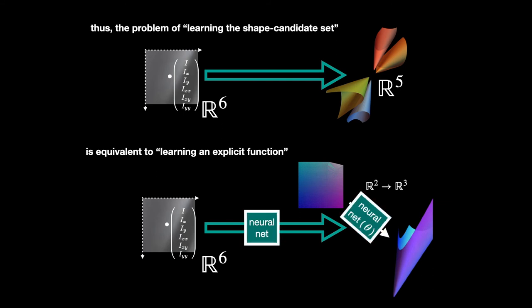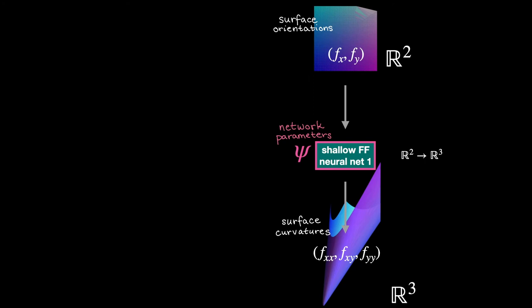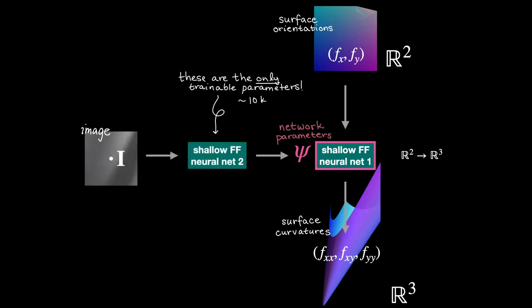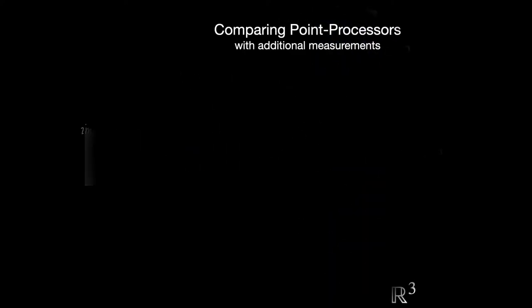We couple a pair of shallow neural networks for this regression. One network approximates the family of functions R2 to R3, and the other network outputs the weights and biases of the first one, thereby approximating the map from image vectors to functions. This gives us our local point processor, a differentiable, compact, and feedforward map from an image vector to its set of locally consistent shapes, all without any explicit notion of lighting.